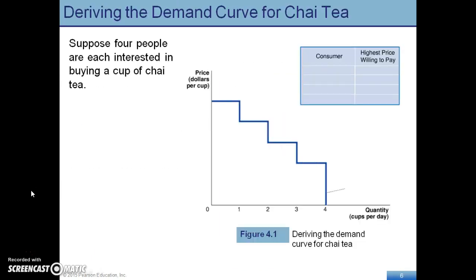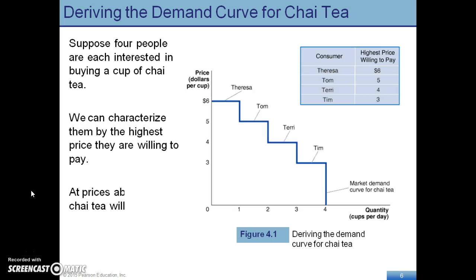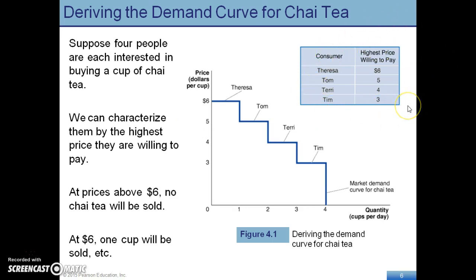When we look at consumer surplus, we want to apply this to ourselves — specifically, how much are you willing to pay for a good or service. If you look at this table, everyone has a different willingness to pay. For example, Therese is willing to pay $6 for a cup of coffee. However, she might not have to pay that much. If the price of coffee was $4, she would basically save $2 because she was willing to pay $6 but only had to pay $4.